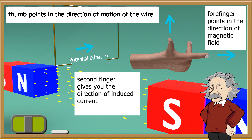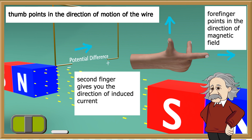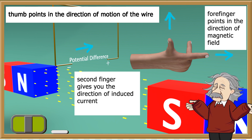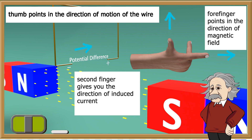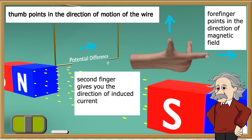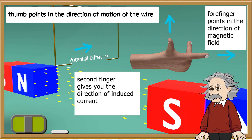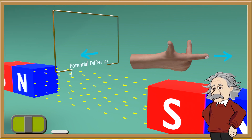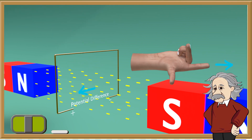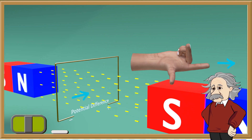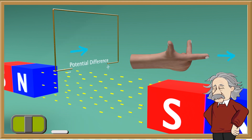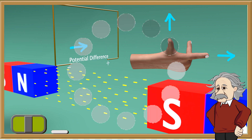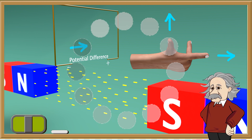So with Fleming's right hand rule, we can determine the direction of induced current. As shown in this example, the second finger points in the direction of the current and the thumb points in the direction of the movement of the wire. You can also see how the direction of induced current changes when we change the movement of the wire. If you like, you can pause the video and try to use Fleming's right hand rule yourself.